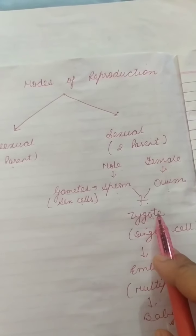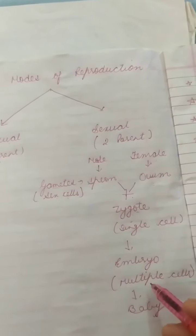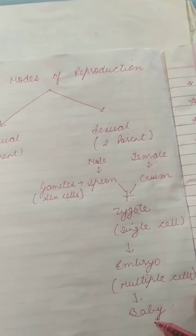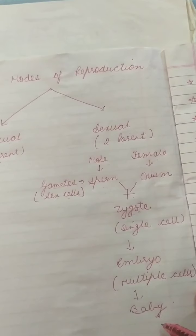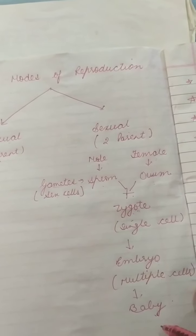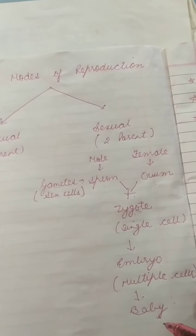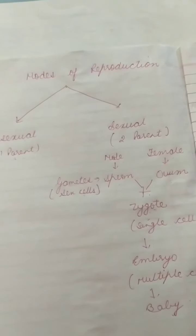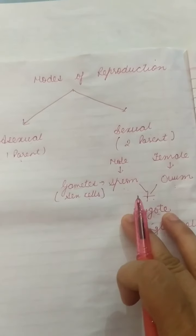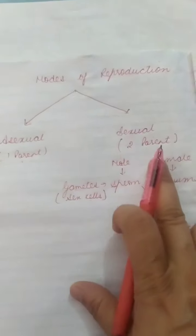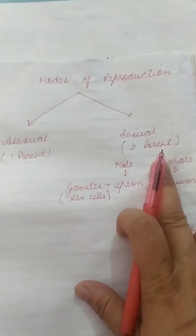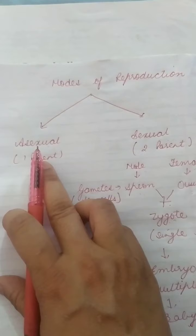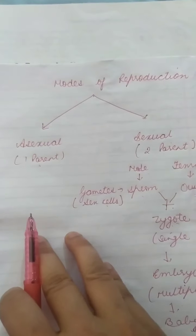The zygote divides into multiple cells which is known as the embryo, and the embryo gives rise to a baby which further grows into an adult. Now, one by one we will discuss asexual and sexual reproduction. In today's video I am going to tell you about the different modes of asexual reproduction.